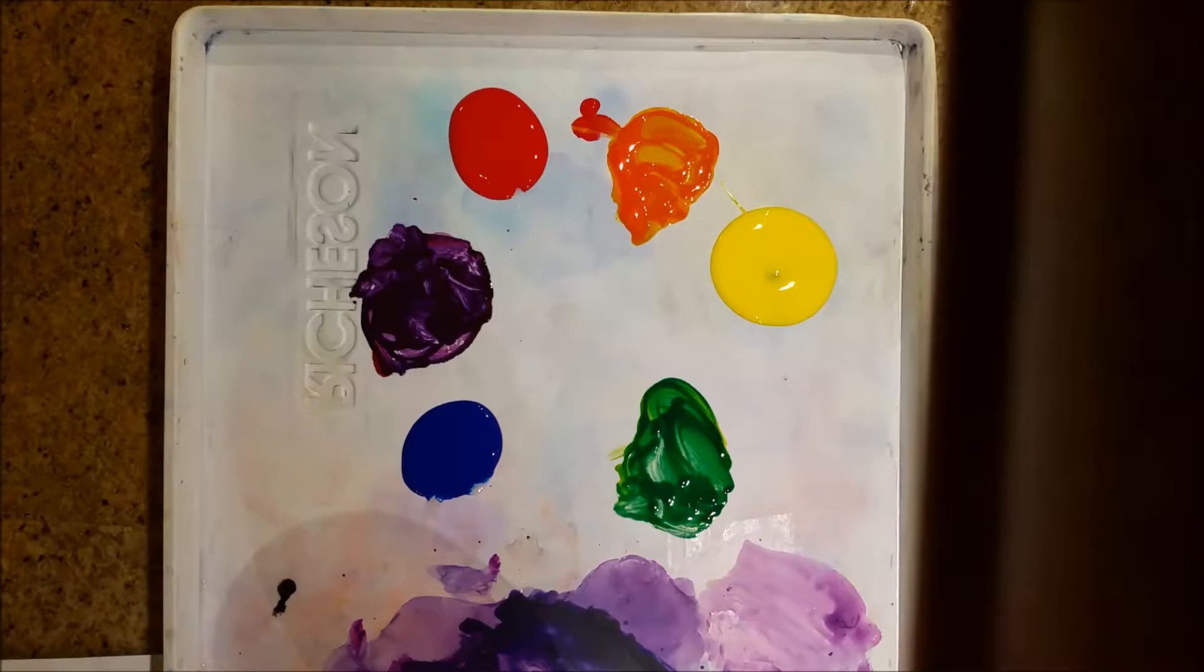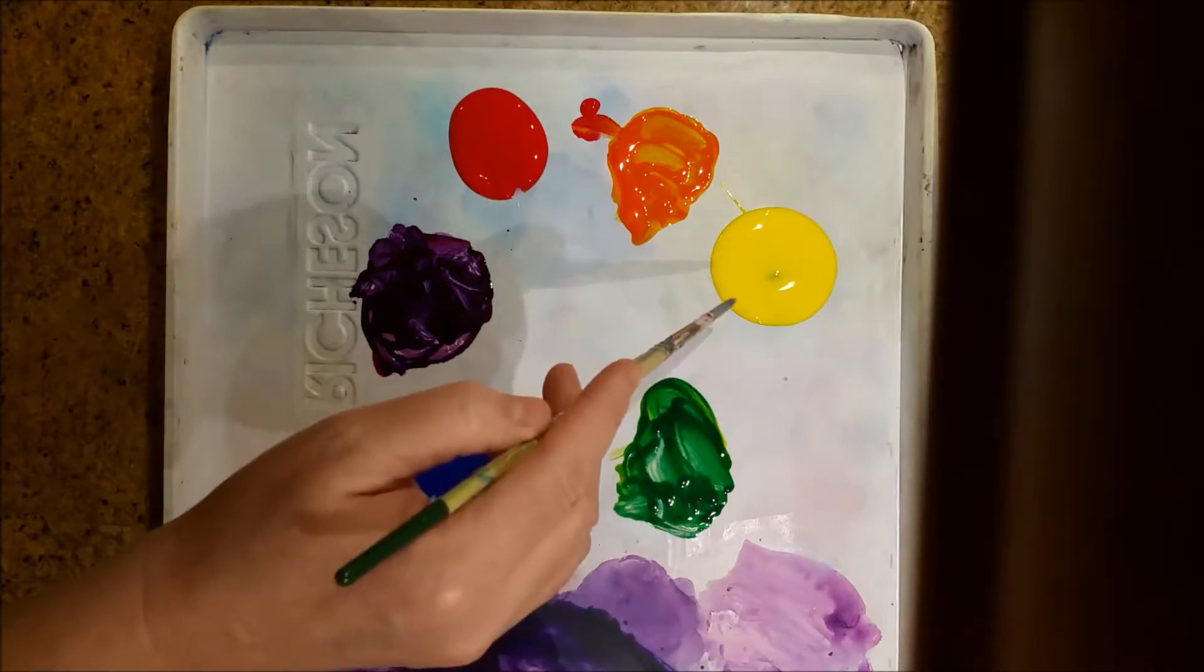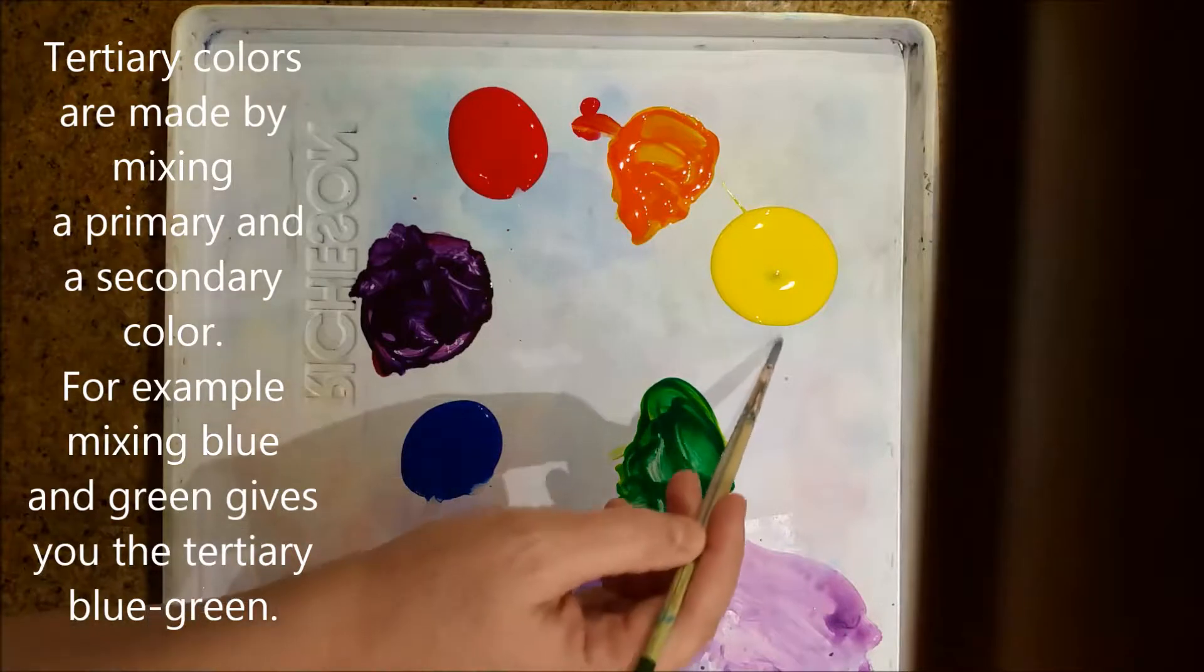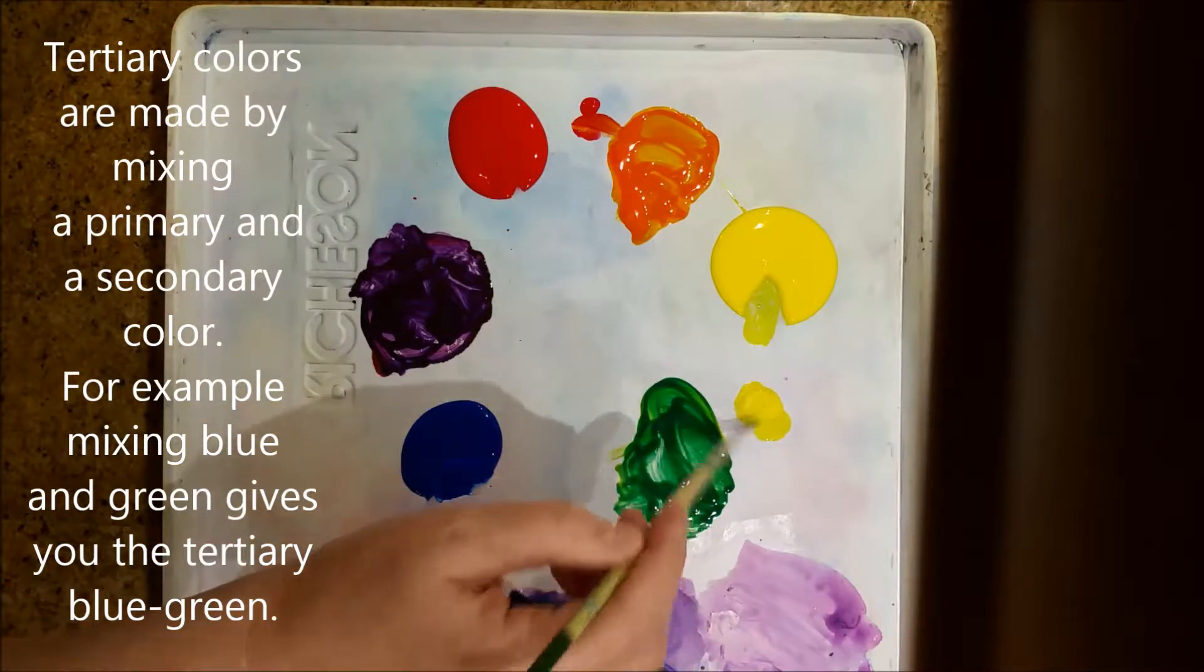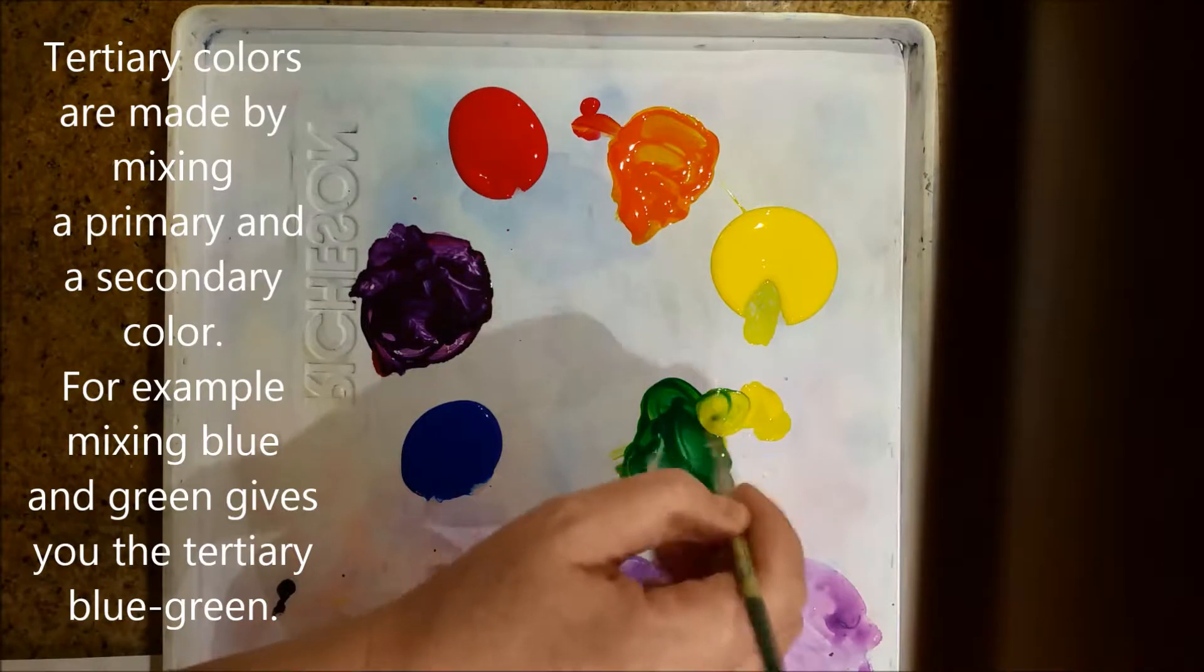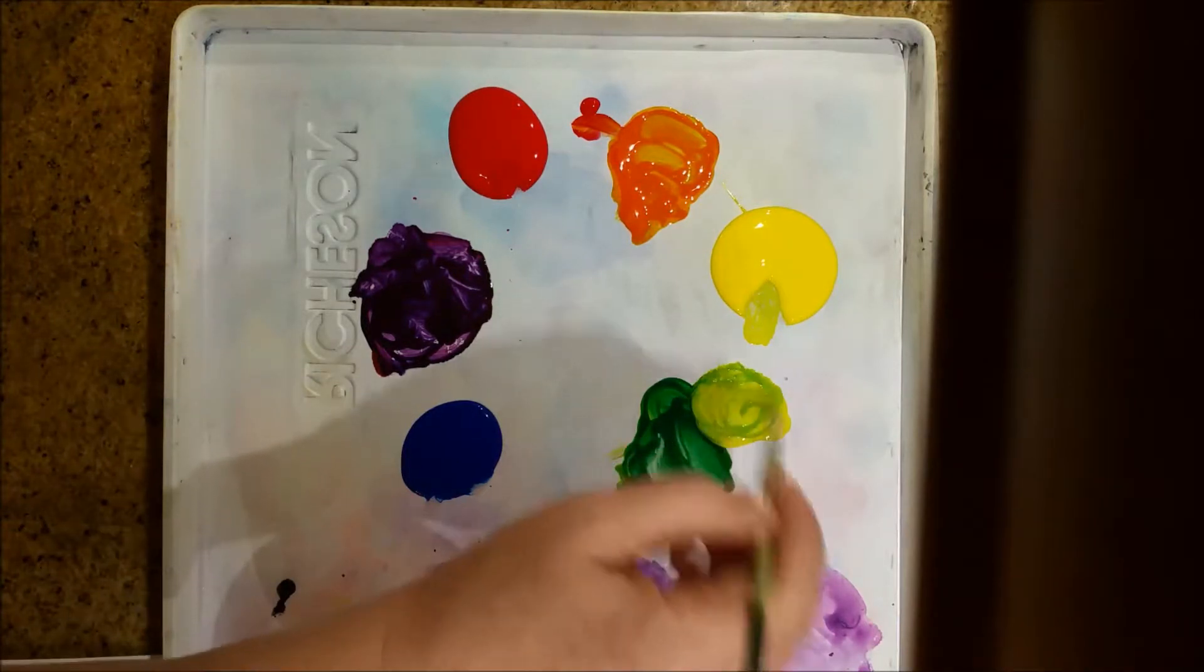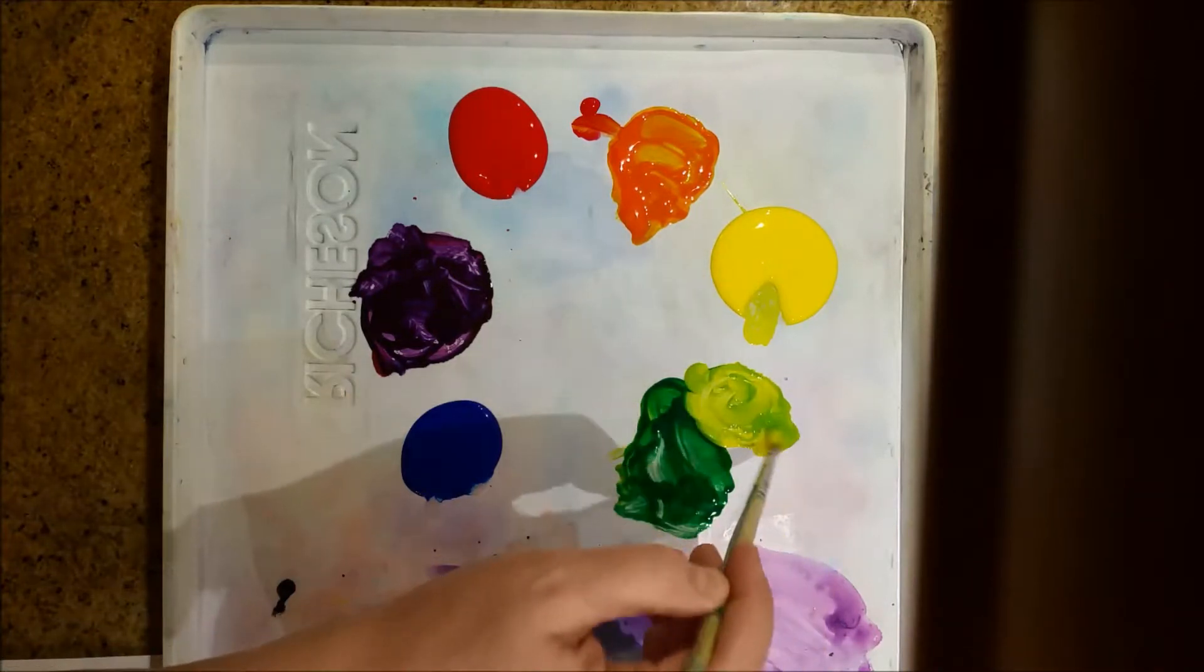Now, I'm going to make the tertiary colors. These are the colors that go in between a primary and a secondary color. Which is lighter? Yellow. So, I'm going to take some yellow, put it over here, and I'm going to mix in a little bit of the green with it. That's yellow-green.